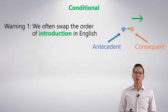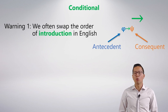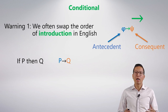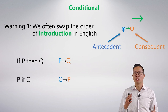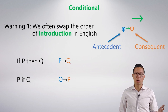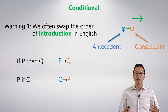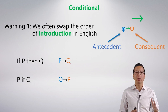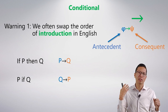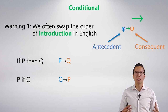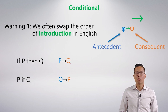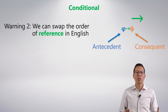For the consequent, there are also lots of ways: then, will happen, will occur, is a consequent, must be the case, follows that. You're really looking for these markers — when you see one of these words, immediately you know it's a conditional, and the stylistic variant is telling you which part is the consequent. The conditional is tricky for two bonus reasons. One is that we often swap the order of introduction in English. If I say 'if P then Q,' that's very natural — it's P arrow Q, no problem. But another way is to say 'P if Q,' which is very common, and this symbolizes as Q arrow P. So you need to spend an extra moment asking which is the antecedent and which is the consequent, because what comes first in English isn't always the antecedent.